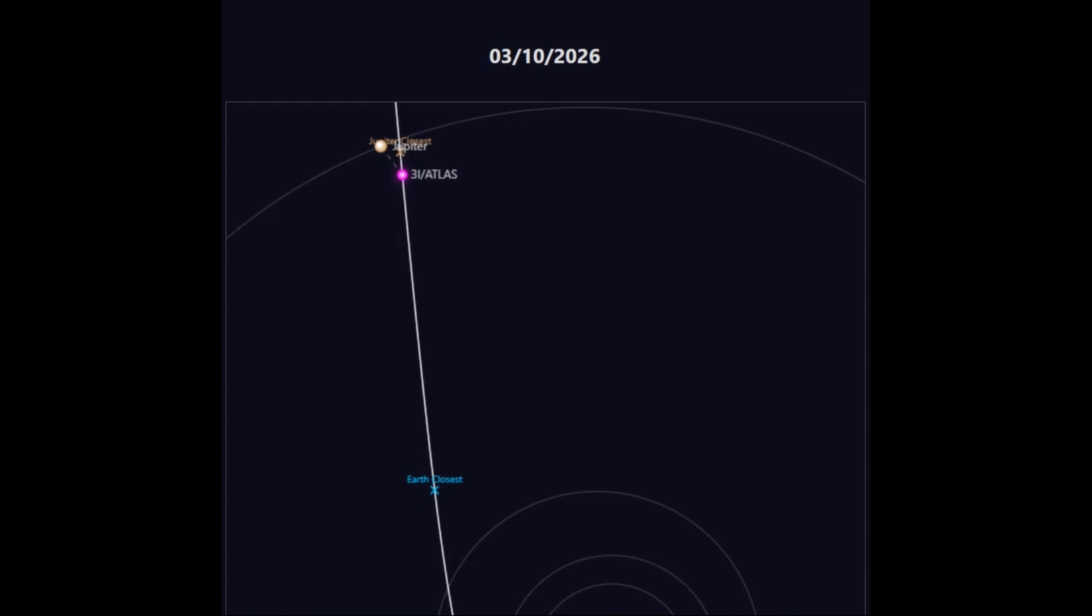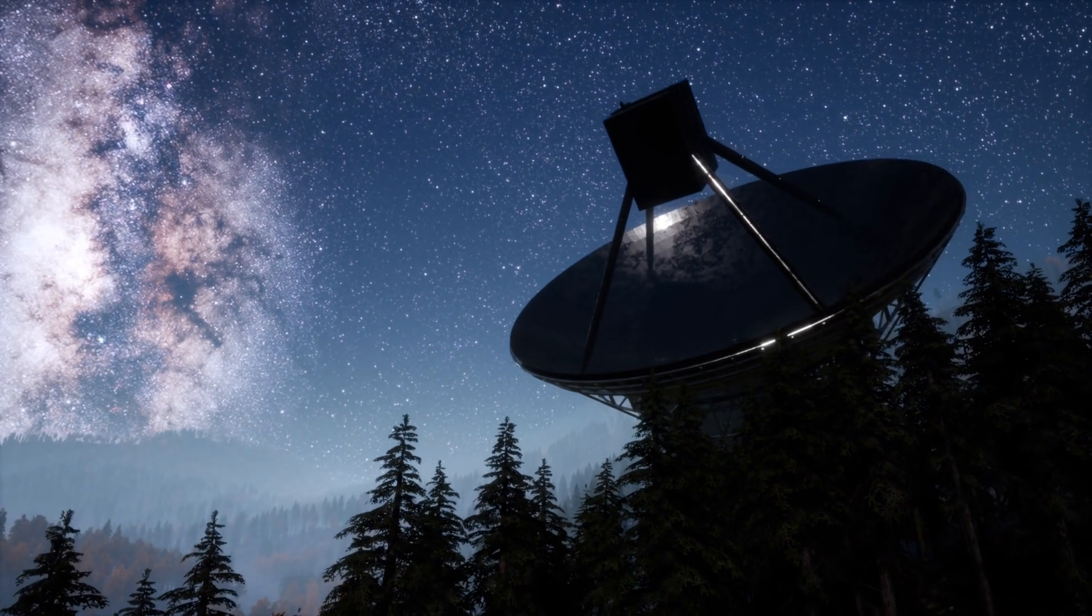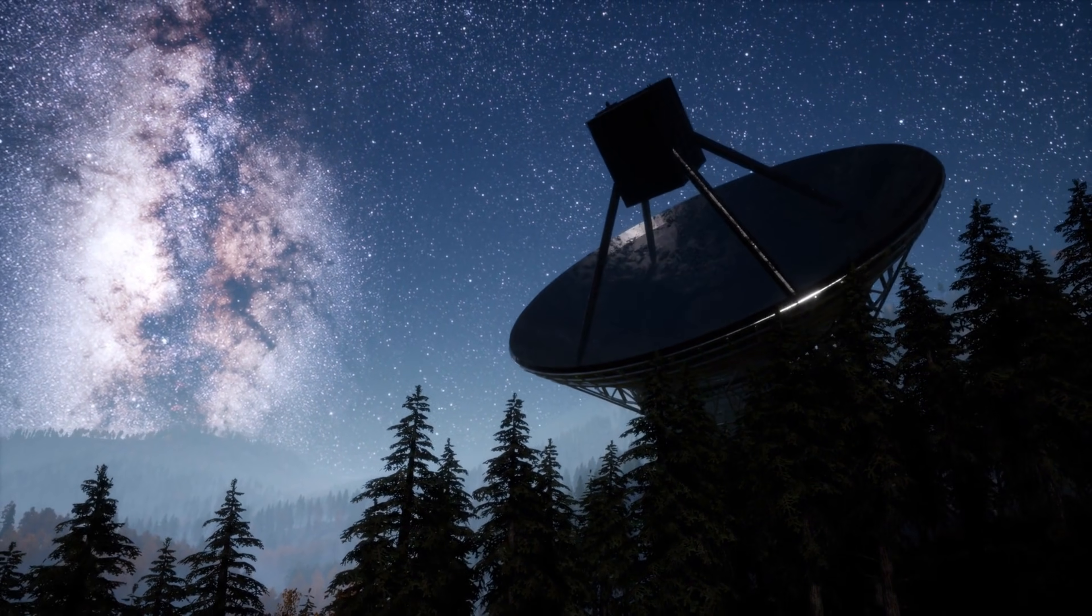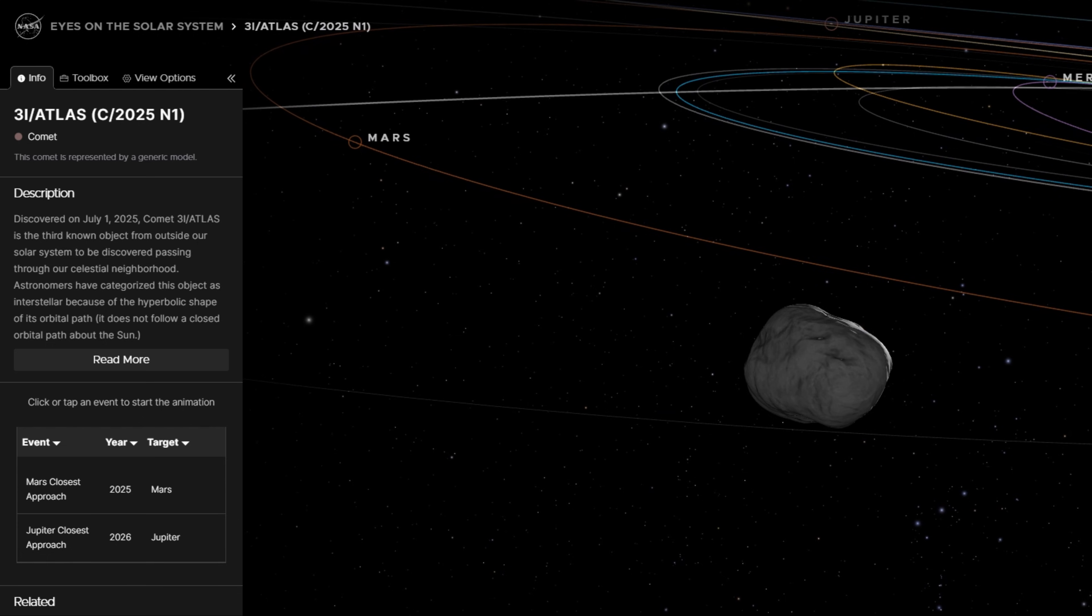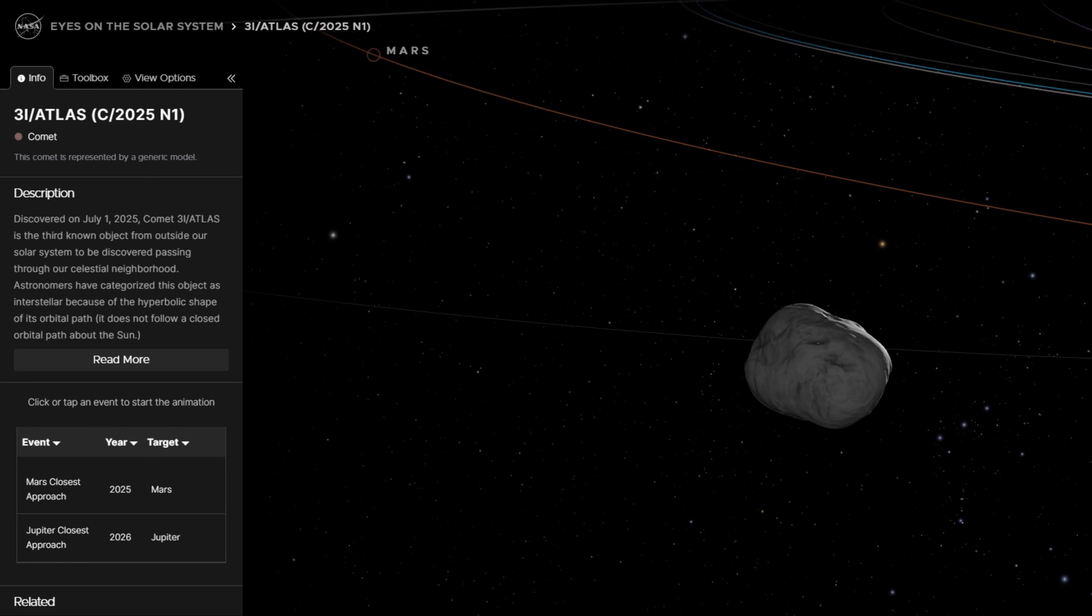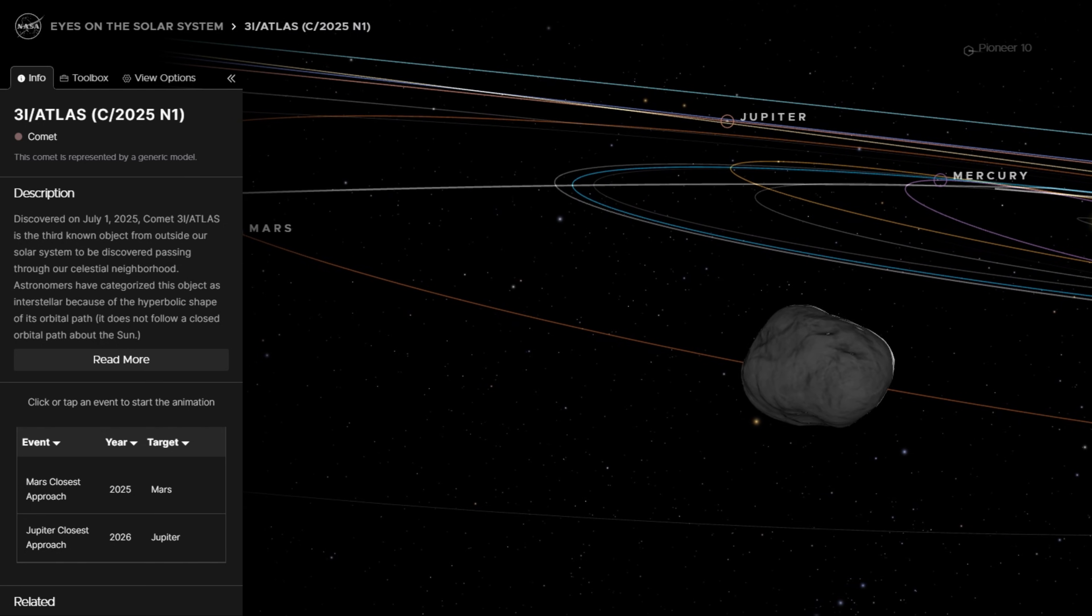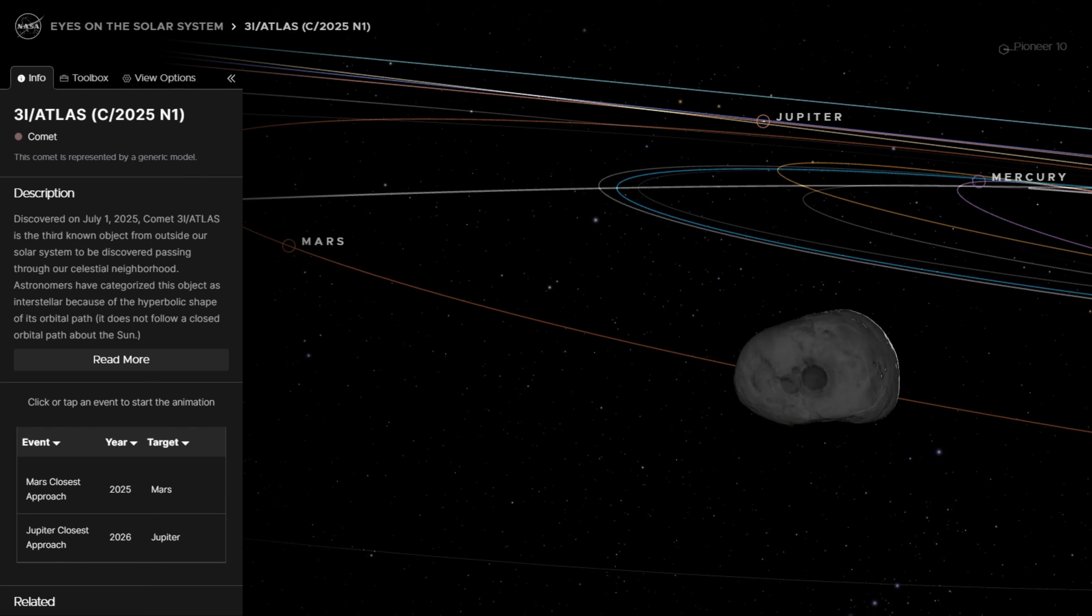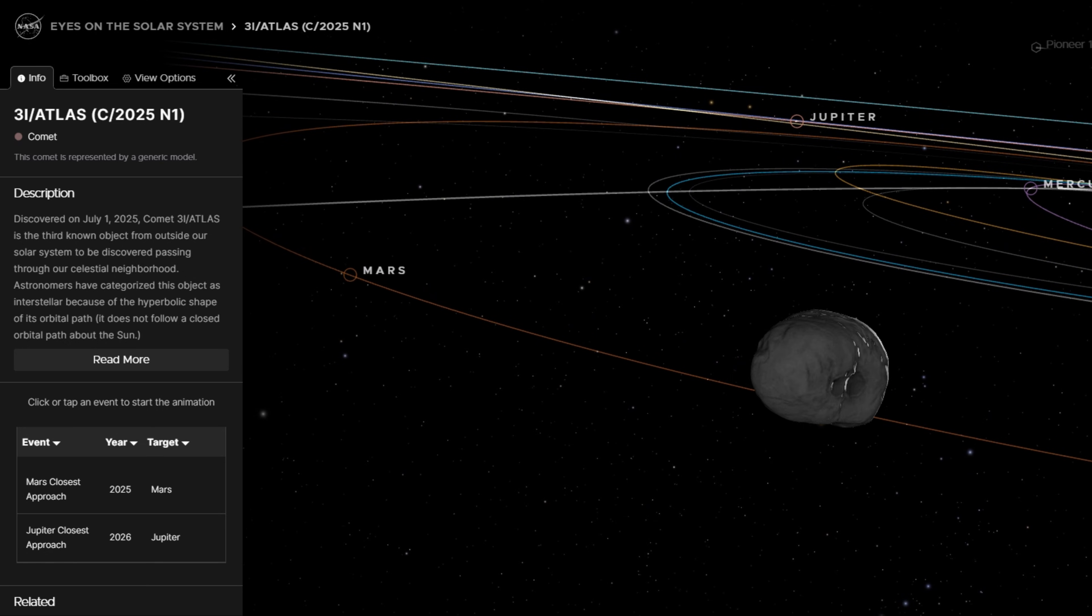Could the high speed be the result of artificial means? In nature, objects typically follow certain physical laws of motion, influenced primarily by the gravitational forces of celestial bodies like the sun. The fact that 3I Atlas was moving so much faster than predicted suggests that there could be another force at play, whether that's additional propulsion from an unknown source or an inherent characteristic of the object itself that we don't fully understand.